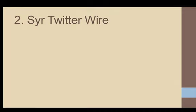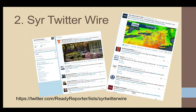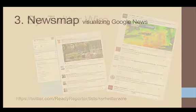My second tip is to use the Syracuse Twitter Wire that I've set up off of my Twitter account, Ready Reporter. It is about 50 to 60 different news makers, including some of the local news media. Here you see some examples of the different kinds of things that are on there. It's great for finding stories and for keeping up with what other media are reporting, or what public relations people or other organizations in town say is happening. You can subscribe to this Twitter Wire and then have it right in your TweetDeck or Hootsuite or on your Twitter feed.